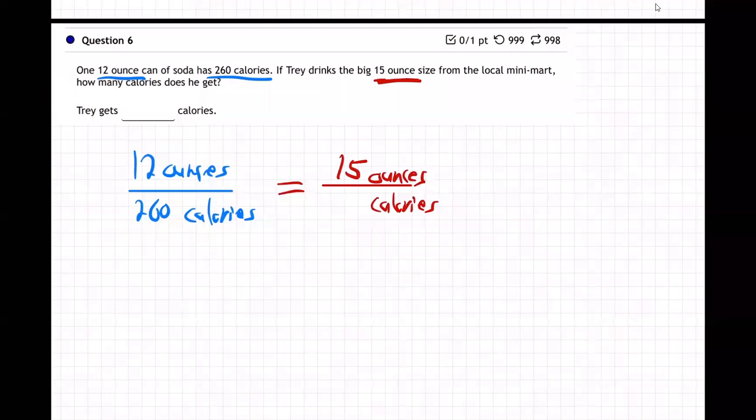And how much does he have? 15 ounces. So that's 15 ounces. The question is how many calories? So that's our x. Does that make sense? 12 ounces of soda is 260 calories, so for a 15 ounce soda, how many calories is that?